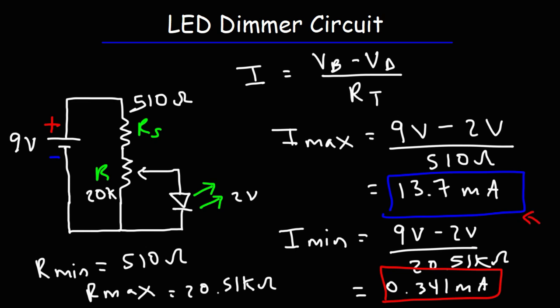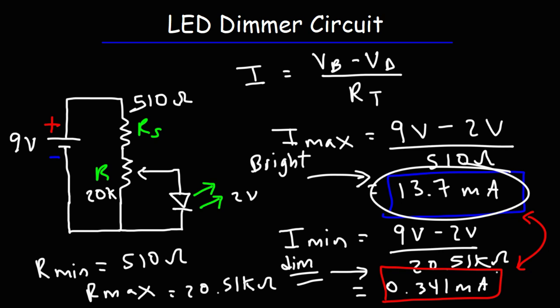So the current will vary between these two. At a current of 0.341 milliamps, the LED is going to be very dim. But at a current of 13.7 milliamps, it's going to be very bright. So by adjusting the setting of the potentiometer from its minimum value to its maximum value, you can adjust the current in the circuit, and thus you can control the brightness of the LED.